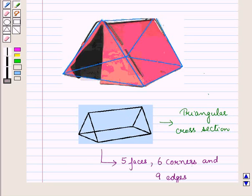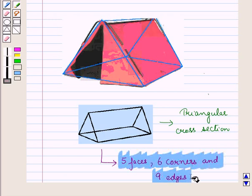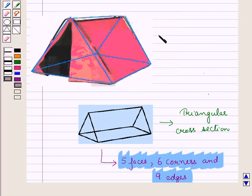And it has five faces, six corners and nine edges. So this tent is a triangular prism.